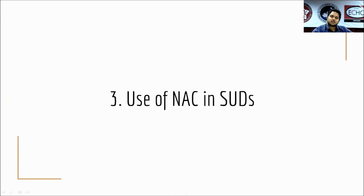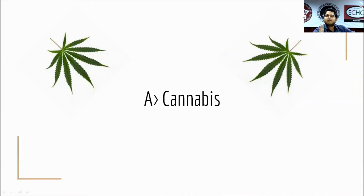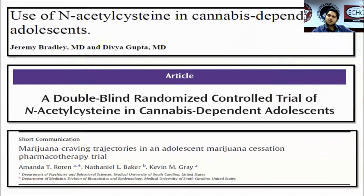Coming to the use of N-acetylcysteine in substance use disorders: there has been an epidemic of substance use problems from the 1970s to 2000, with cannabis and cocaine taking the forefront. This is the time during which people started exploring newer drugs and how N-acetylcysteine can be applied to substance use disorders. Most of the evidence for N-acetylcysteine comes from these two groups — cannabis and cocaine. The first trials were in cocaine, and for cannabis they started around 2006.